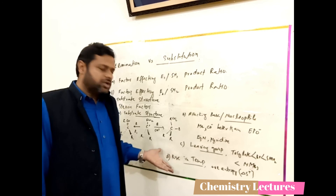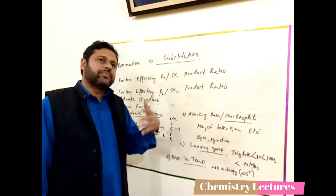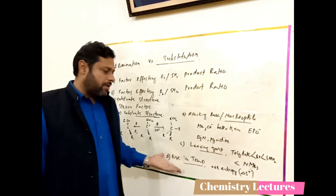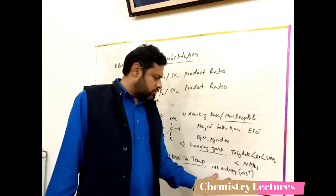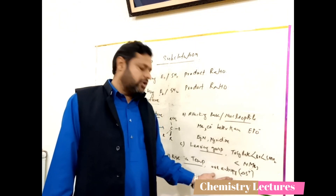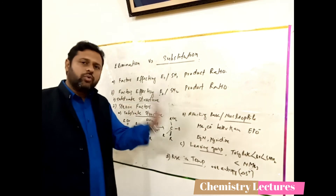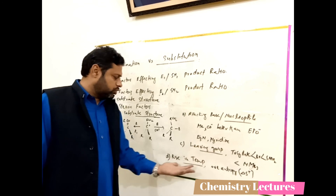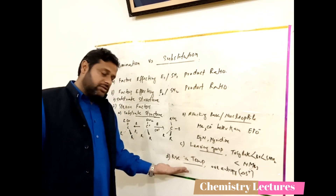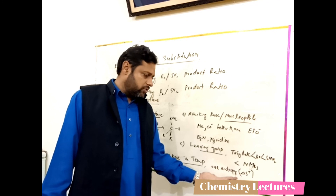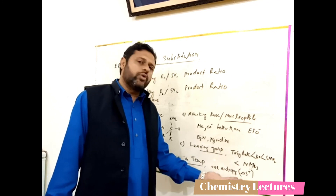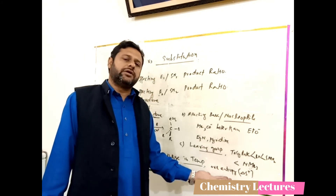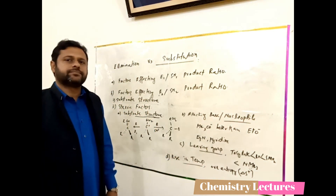The last factor is rising temperature. When you increase the temperature, elimination is favored. This is because increasing temperature increases the number of molecules in the products, raising entropy. A positive entropy gives a more negative delta G (free energy), so the reaction is thermodynamically favored. Therefore, increasing temperature makes entropy more positive and free energy more negative, favoring elimination.